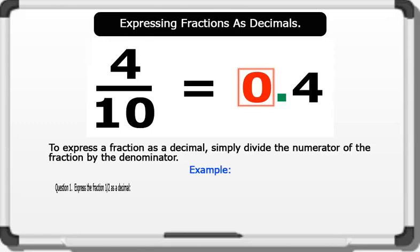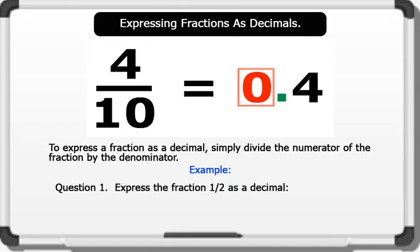Question 1: Express the fraction 1 over 2 as a decimal. Solution: Dividing the numerator by the denominator — 1 divided by 2 equals 0.5.